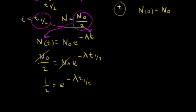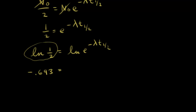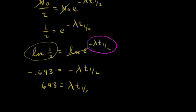To get rid of the e, we take the natural log of both sides. The natural log of one-half equals negative 0.693 — you can verify this with a calculator. On the right, the natural log and e cancel, leaving negative lambda times t½. Ignoring the negative signs, we have 0.693 equals lambda times t½. Solving for half-life: t½ equals 0.693 divided by lambda, the decay constant.